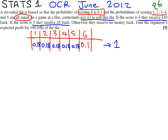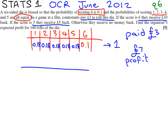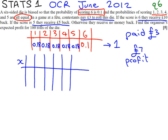Remember, they've already paid £3, so if they win a tenner, all they've actually won is £7 profit. What we're going to do now is think about the probability distribution, and X is going to be our profit or loss. Reading the final part of the question, it's asking for the organiser's expected profit, so we should think about what the organiser is going to be getting.